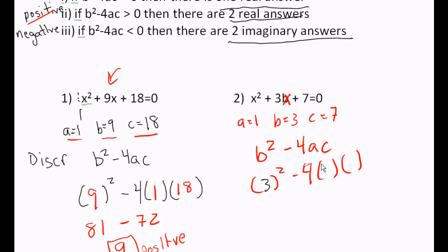b is 3, a is 1, and 7 is c. 3 squared is 9, 4 times 1 times 7 is a negative 28.